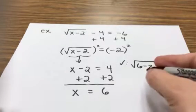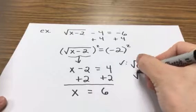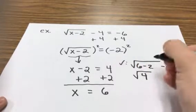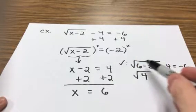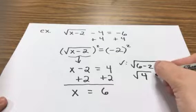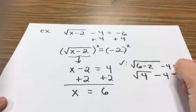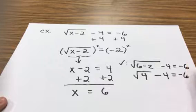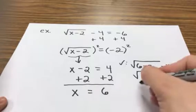So the square root of 6 minus 2, that's the same thing as the square root of 4. All I did was I subtracted the numbers on the inside. All right, let's take the square root of 4. Let's see what we get.